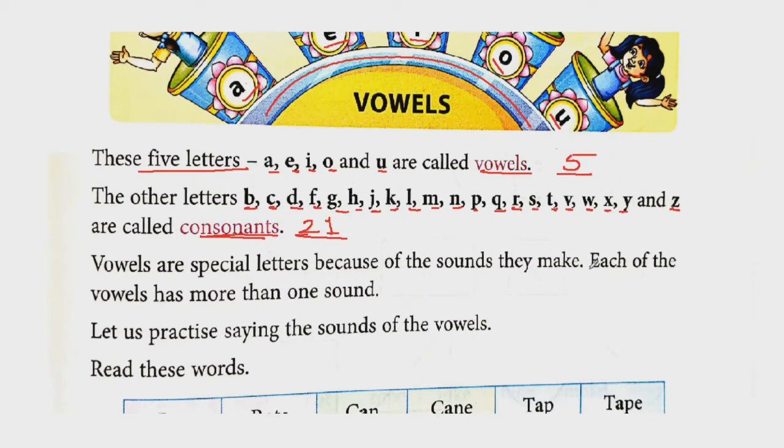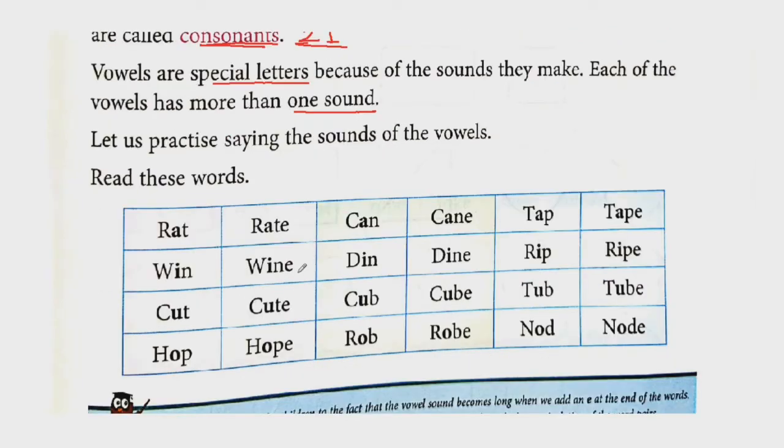Vowels are special letters because of the sound they make. Vowels are special letters because their sound is different. Each of the vowel has more than one sound. Every vowel has more than one sound. Let us practice saying the sound of vowels. Below you are given a table with a number of words written using vowels. But each word's pronunciation is different. That's why it's said that vowels are special letters because of the sound they make.